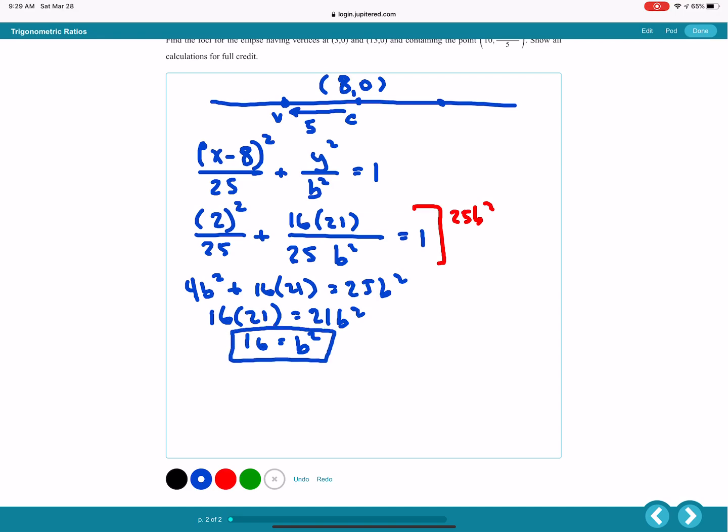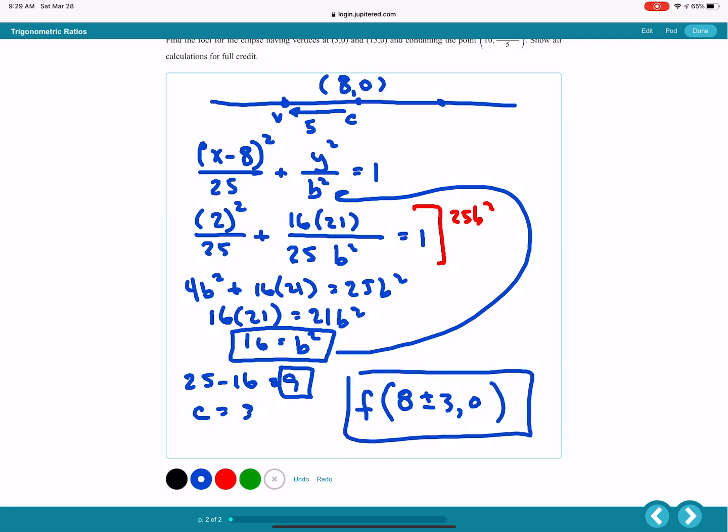Now that I know that b squared is 16, if I were to put it back in there, I could figure out my answer, but I don't really need to. I'm looking for the foci. So I simply want to take 25 minus 16, which equals 9, and that tells me that c must have been 3. So my answer for the foci coming from the center is going to be 8 plus or minus 3, 0.